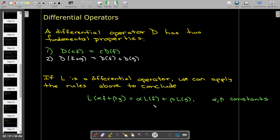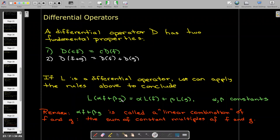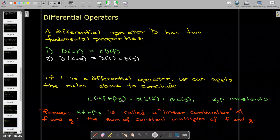And that gives us an opportunity here to introduce a phrase which describes alpha f plus beta g. We call that a linear combination of f and g. A linear combination means that you take the sum of multiples of a set of functions like f and g.